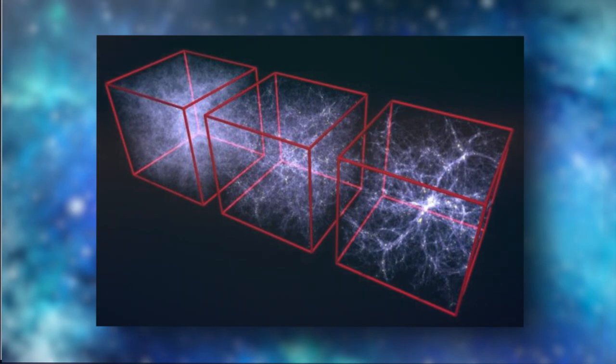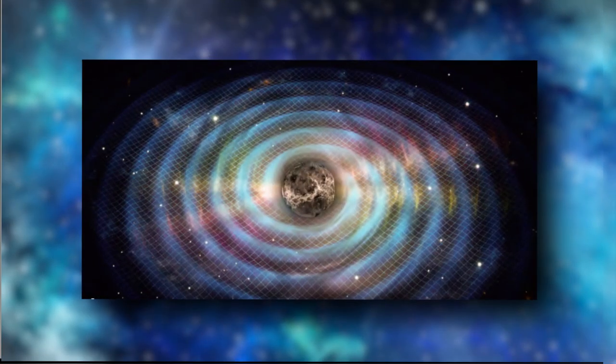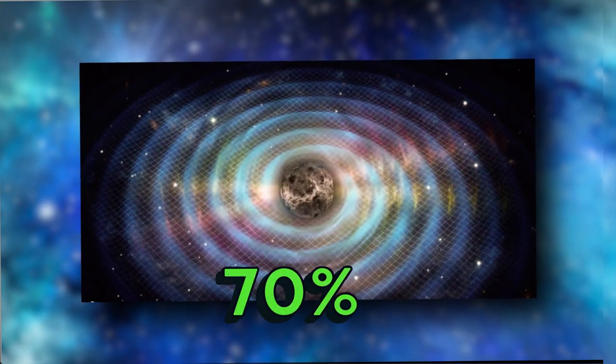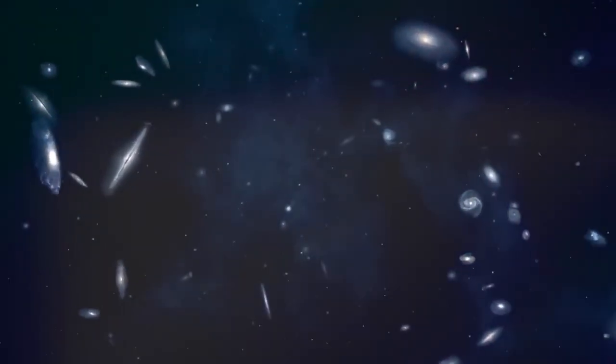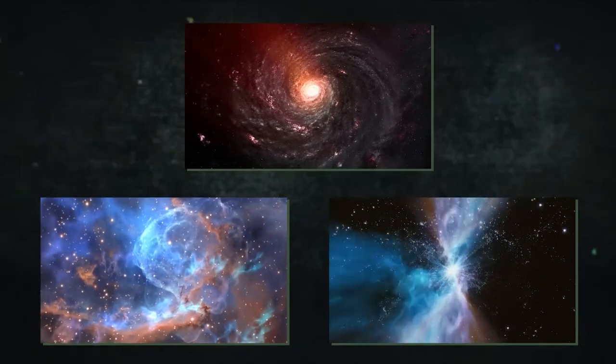This dark energy or cosmological constant, making up about 70% of the universe's total energy, was like a hidden force repelling galaxies away from each other, causing them to speed up rather than slow down.